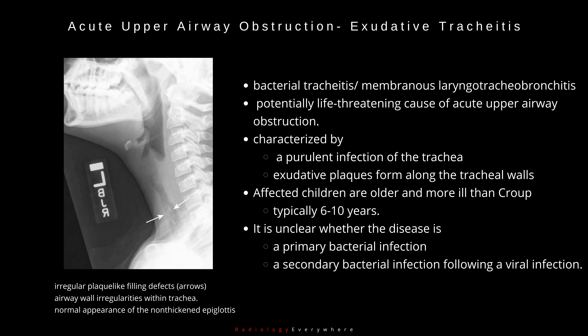Exudative tracheitis, also known as bacterial tracheitis or membranous laryngotracheobronchitis, is another uncommon but potentially life-threatening cause of acute upper airway obstruction. It is characterized by a purulent infection of the trachea, in which exudative plaques form along the tracheal walls, similar to diphtheria. Affected children are older and more ill than those with croup, typically six to ten years. It is unclear whether the disease is a primary bacterial infection or a secondary bacterial infection following a viral infection.